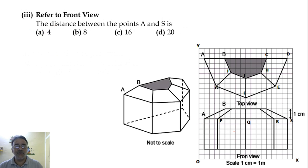So now we will move toward the third question. The distance between the point A and S. So this is related with front view. Front view means this diagram. So we need to find the coordinate of A first. Then we will find the coordinate of S. The coordinate of A is: x-coordinate is 1 and the y-coordinate is 1, 2, 3, 4, 5, 6, 7, 8.